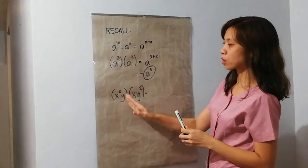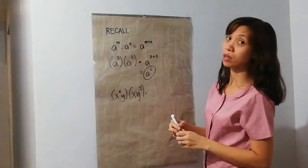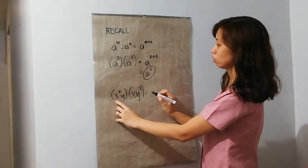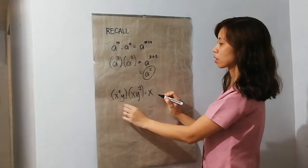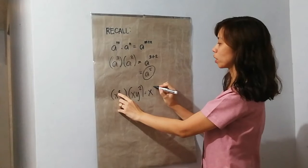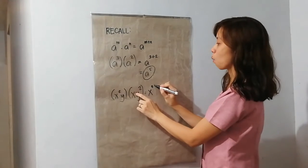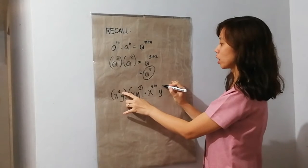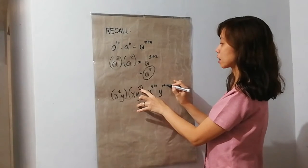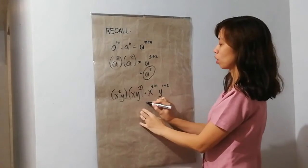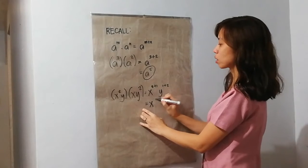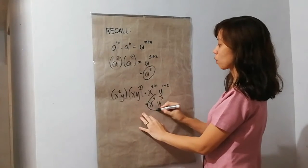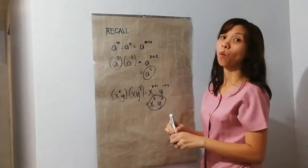Next, we have x squared y times xy squared. So, pareho silang merong x. So, kukunin natin yung x, and then we have exponent of 2. Dito ay 1. And then, we have y. Ang exponent dito is 1 plus 2. x: 2 plus 1 is 3. y: 1 plus 2 is 3. So, we have x cubed y cubed.